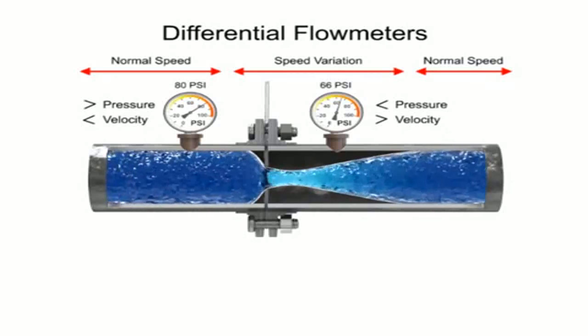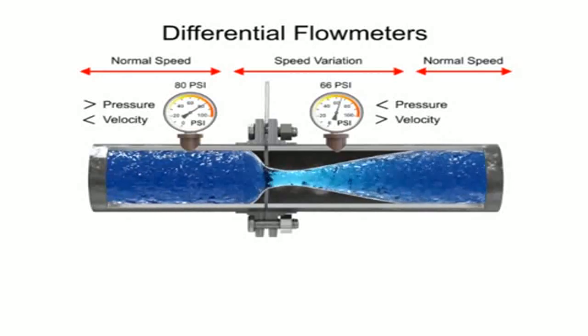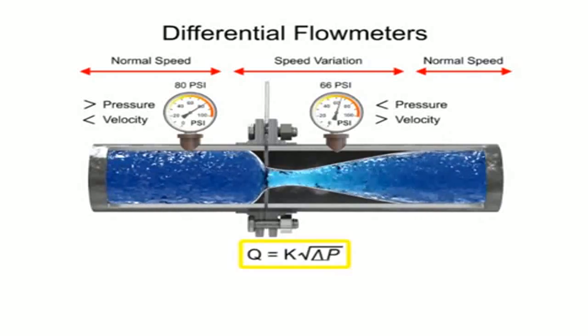With a known differential pressure and velocity of the fluid, the volumetric flow rate can be determined.